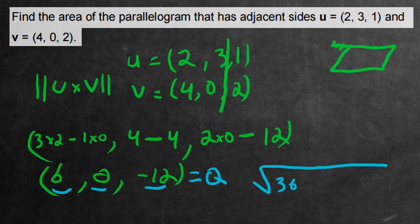So 6 squared is 36. Add 0 squared is just 0. Add negative 12 squared is 144. And then we, of course, square root all of that overall just to get the final length of the orthogonal vector that we found. So now we add up 36 and 144. That would give me square root of 180.